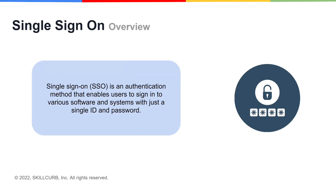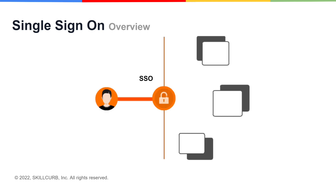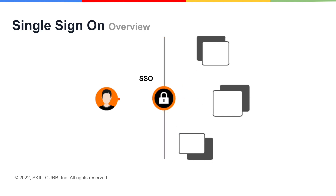Single Sign-On, or SSO, is an authentication method that enables users to sign into various softwares and systems with just a single ID and password. SSO allows IT departments to administrate a single identity that can access many machines and cloud services. Login for SSO is seamless, where a user once logs into their primary directory, and as soon as they utilize this software they are presented with a login screen.